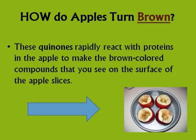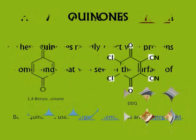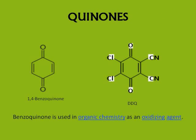Quinones are compounds having a fully conjugated cyclic dione structure, such as that of benzoquinones, derived from aromatic compounds by conversion of an even number of hydrocarbon groups into carbonyl groups with any necessary rearrangement of double bonds. Polycyclic and heterocyclic analogues are also included.